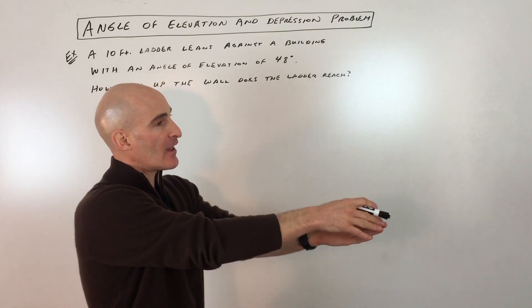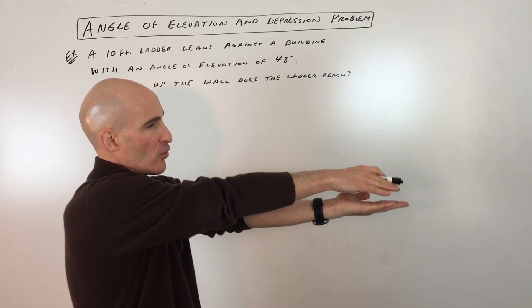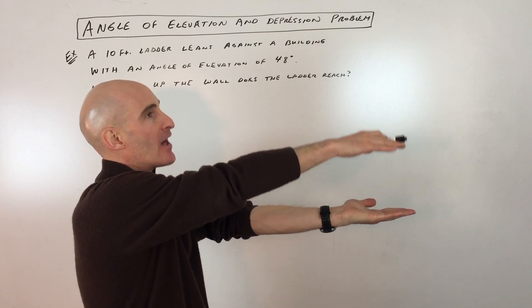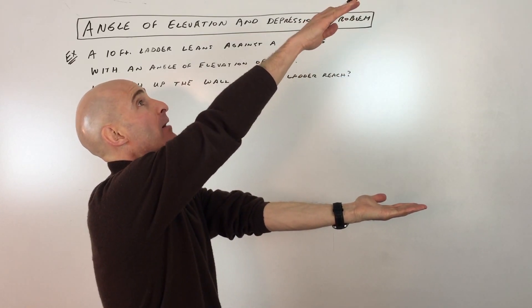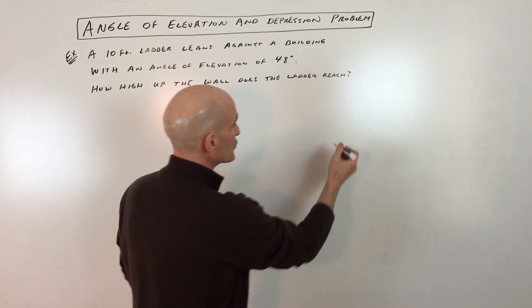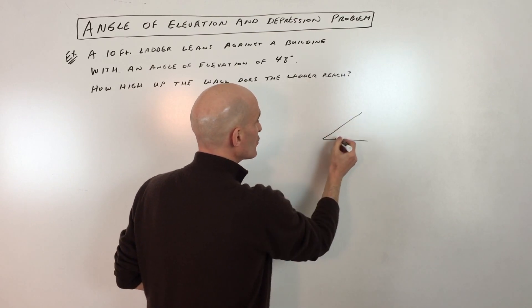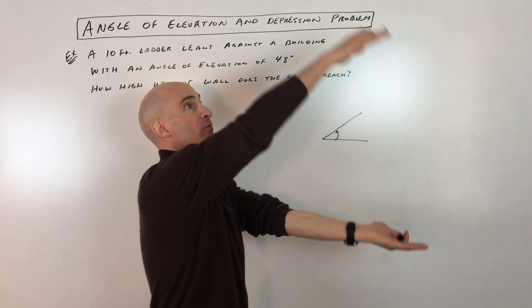This is angle of elevation. Elevation is like if you're facing horizontally like this and you're elevating or you're looking up, so to your line of sight. If you were to draw this, angle of elevation would look like this. So it's up from the horizontal.